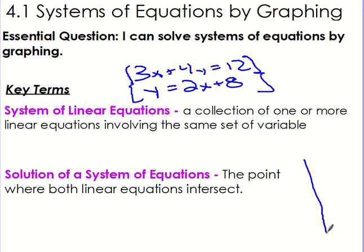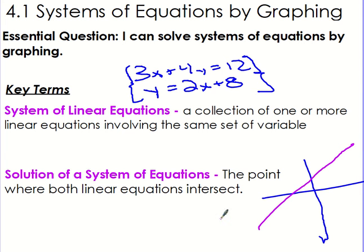If I'm graphing two equations, I know that this is a line and this is also a line. The only point that is on both of these lines is where they intersect, and that's going to be my solution to the system of equations.